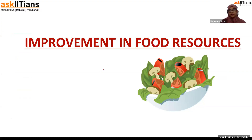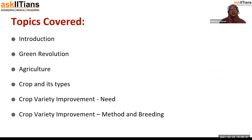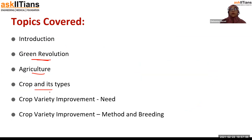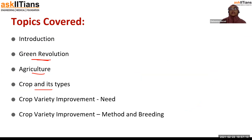Improvement in food resources. We are going to cover the following topics. First, we are going to start with the introduction. Then we will move on to the green revolution, which is a revolution and much more. Then we are going to move on to agriculture crops, their types, and the need, methods and breeding of crop variety improvement.